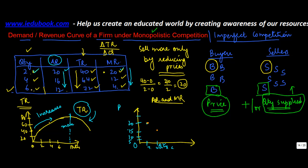At 6, average revenue is 12. So if you draw this, you get the average revenue curve.